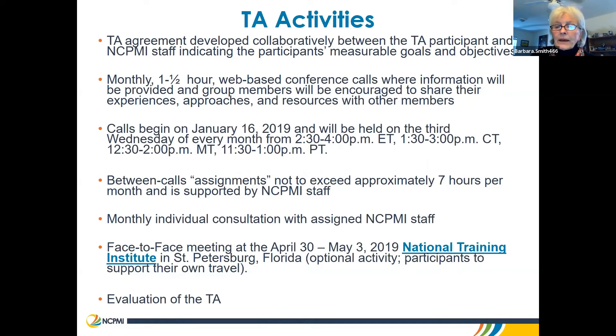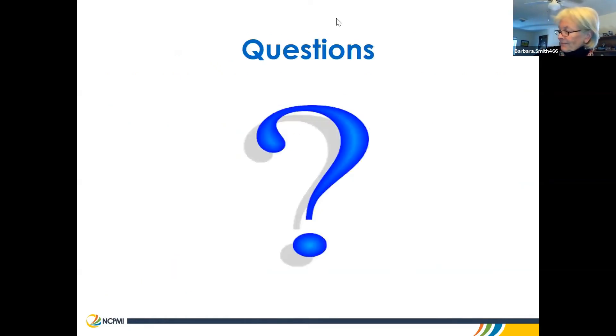The kinds of activities we'll engage in: we will develop a TA agreement that has your measurable goals and objectives. We will meet monthly for one and a half hours as a group. Those calls are the third Wednesday of every month for an hour and a half. There will be assignments between calls. There will be at least monthly consultation with your assigned NCPMI staff person. And if possible, if you can get to NTI, we really hope to have a face-to-face meeting with the cohort.